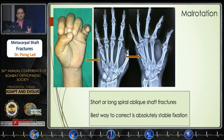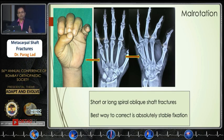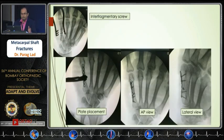Short or long spiral oblique fractures usually have malrotation. These fractures, unless you have absolute stability and correct the rotation, usually do not correct the malrotation. If the malrotation is not corrected, the grip strength of the hand will definitely be compromised.